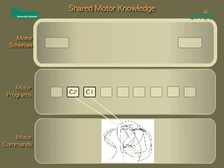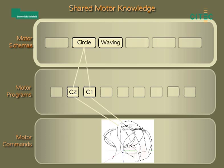Finally, at the top level, motor schemas group different performances of a gesture together, like waving with the right or the left hand.